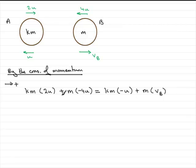So all we need to do now is just tidy this up and make Vb the subject. I can see that we've got an m in every term, so I could divide through each term by m, so they cancel out. And then I've got 2ku minus 4u. And that equals minus ku plus Vb. So all I need to do is add ku to both sides. And so therefore I've got the final velocity of B equals 3ku minus 4u.